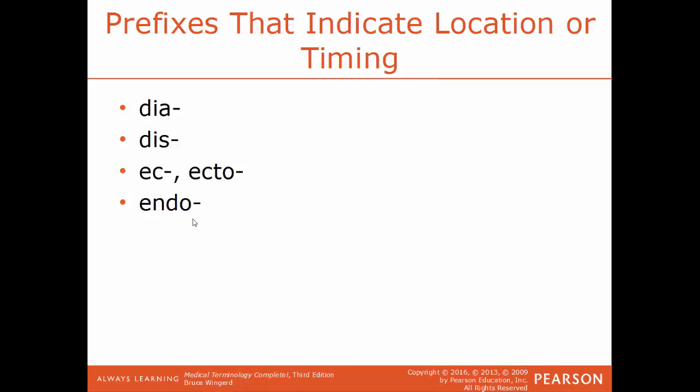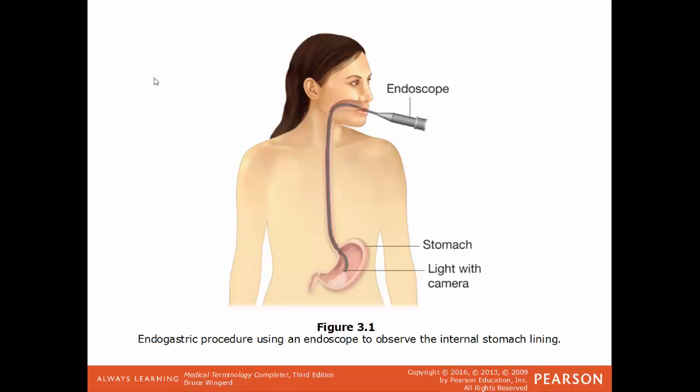Dia means complete or through. Think of a diameter in geometry, for example, it goes all the way through a figure. Dis means to separate. So think of dissection. When you're dissecting a specimen, you are taking it apart. EC or ecto both mean outside. And the opposite of that would be endo, which means inside. An example of that would be an endogastric procedure where you use an endoscope. It's going inside the stomach. Endo means inside, gastric means the stomach, so inside the stomach. An endoscope, the scope is a tool used for viewing, so you're using this tool to view inside the stomach.